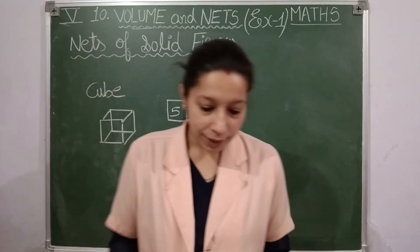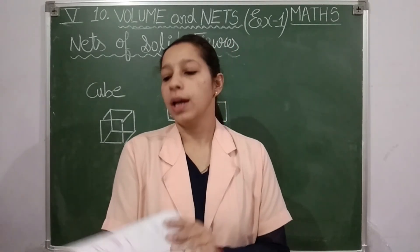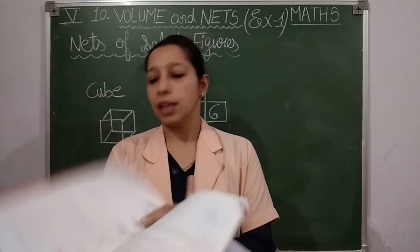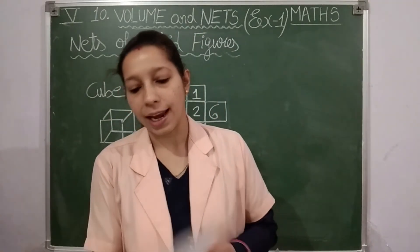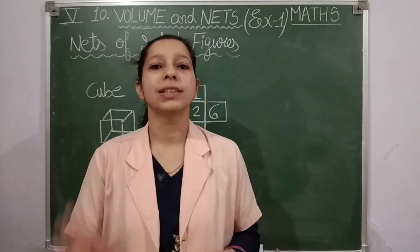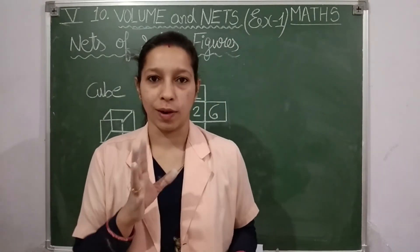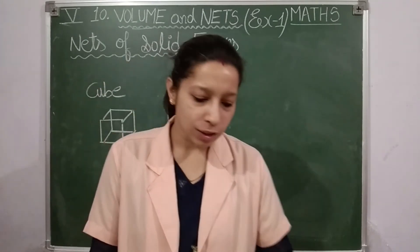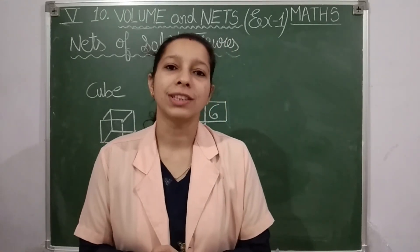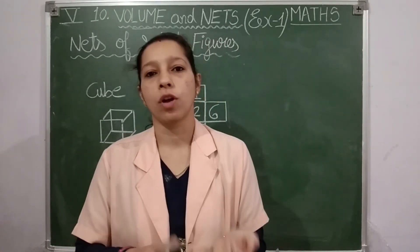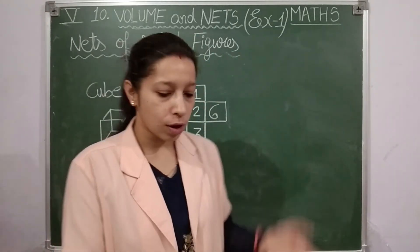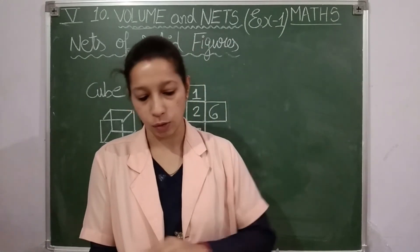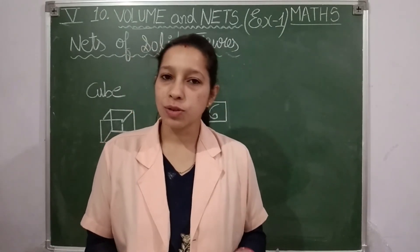In the same way, there are nets for cuboid, cylinder, and cone in your textbook on pages 157 and 158. Practice by making the sketch on paper, joining it, and forming the solid figure. That is all for this chapter — Volumes and Nets. Learn the formulas for volume of cube and cuboid, study the nets information, and complete the MCQs. Thank you students.